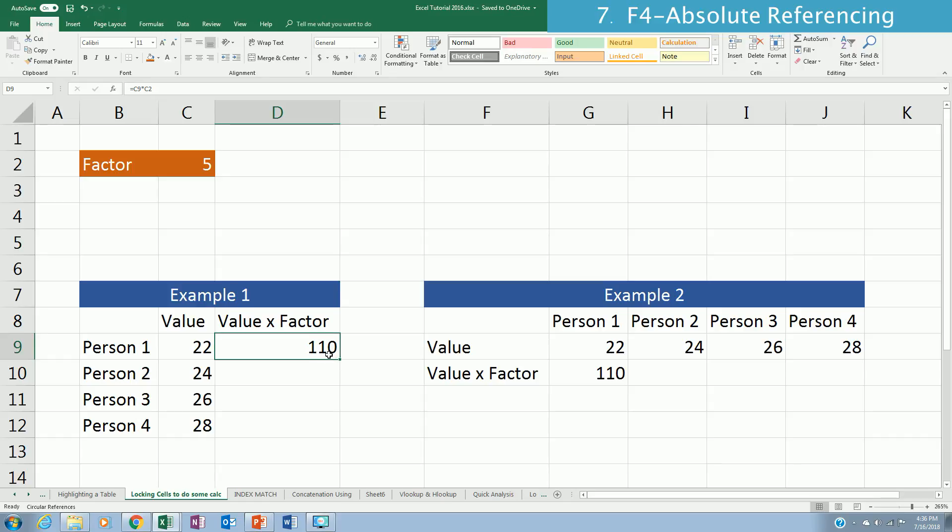So when you do some calculation, like for example in this case, C9 which is value 22 here multiplied by C2 which is factor 5. When you do that calculation and apply the same calculation to the other rows in your Excel, it will give you 0.